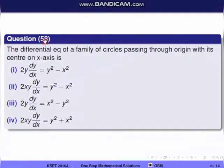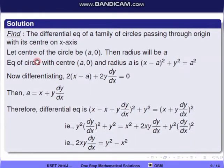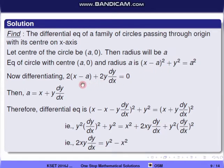Question 58: The differential equation of a family of circles passing through the origin with center on the x-axis. The equation of a circle with center (a, 0) passing through the origin is (x − a)² + y² = a². Differentiating with respect to x: 2(x − a) + 2y·(dy/dx) = 0.